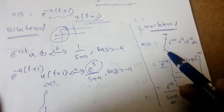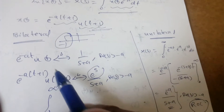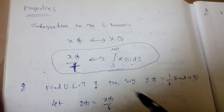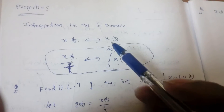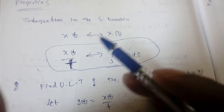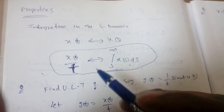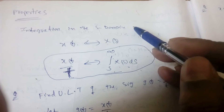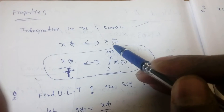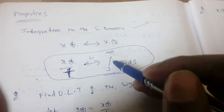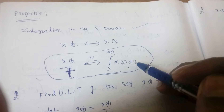Remember: for the unilateral transform, integration starts from 0 to infinity. For bilateral, it starts from minus infinity to infinity. Now, there are some different properties compared to bilateral. All other properties like linearity and time shifting remain the same. But one key property is integration in the s-domain: if x(t) has Laplace transform X(s), then x(t) divided by t has Laplace transform equal to the integral from s to infinity of X(s) ds.